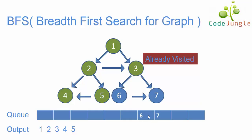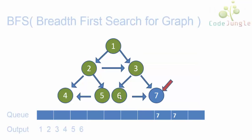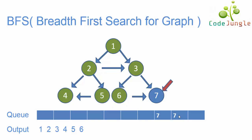Next we consider element 6, which is the next element in the queue. Element 6 has a neighbor element, 7, so 7 is moved into the queue and 6 has been moved to the output.